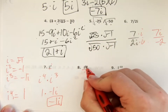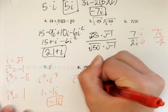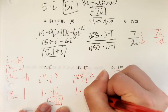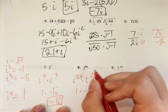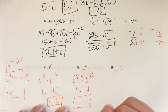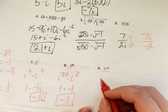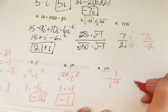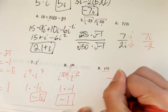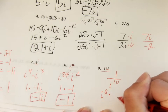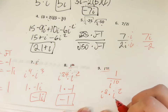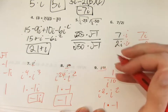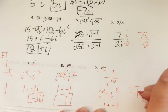For i to the twenty-sixth, the highest factor of four is i to the twenty-fourth times i squared. i to the twenty-fourth is one, times negative one this time — since i squared equals negative one — so i to the twenty-sixth equals negative one. For i to the negative tenth: any time you have a negative exponent, it is the reciprocal, so one over i to the tenth. i to the tenth is i to the eighth times i squared — i to the eighth is one, times negative one. So one over negative one is still negative one.